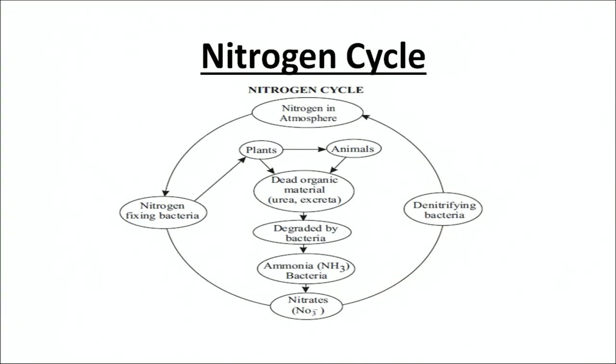Talking about the details of the nitrogen cycle, as shown in the flow chart, the nitrogen in the atmosphere is first picked up by nitrogen-fixing bacteria. It is then made available to plants and animals through the food chain. When plants and animals die and decompose, the dead organic material acted upon by bacteria is converted to ammonia and then to nitrates. These nitrates are acted upon by denitrifying bacteria and nitrogen is released back into the atmosphere.